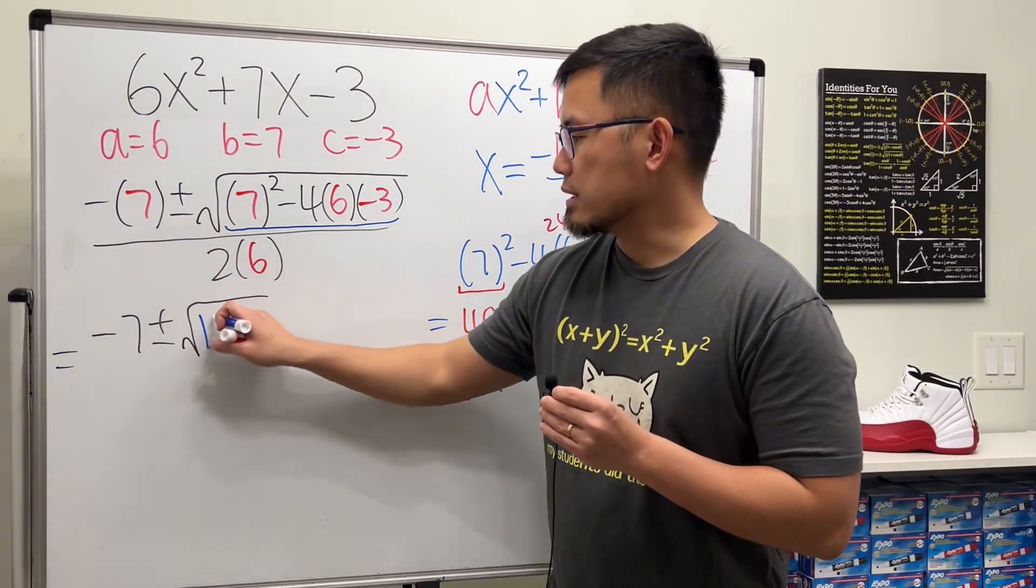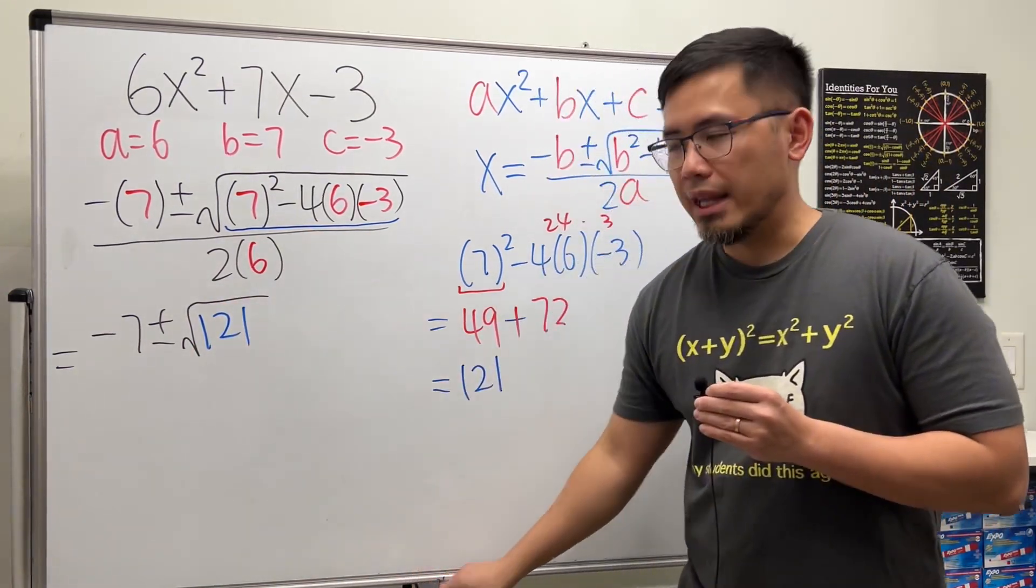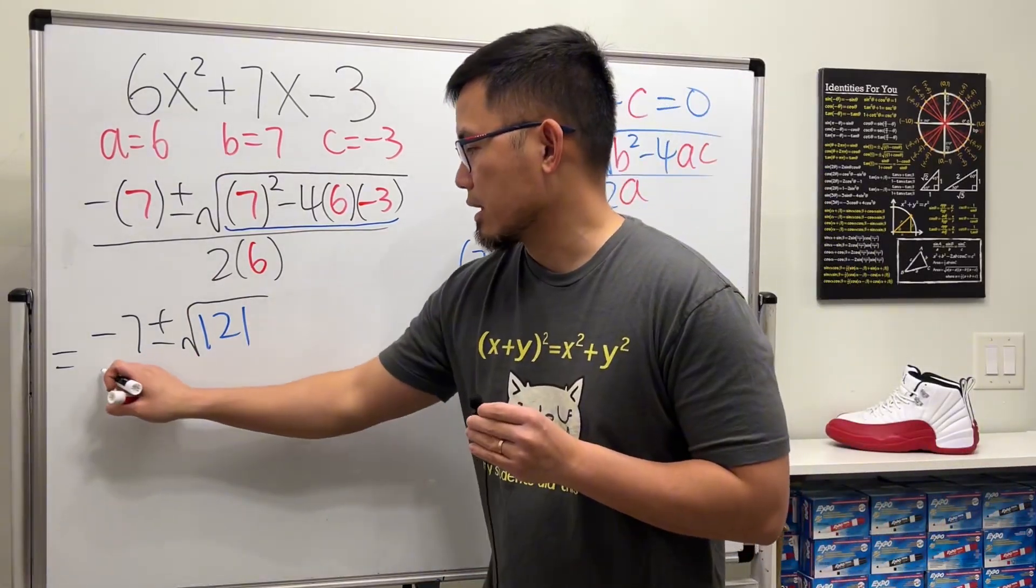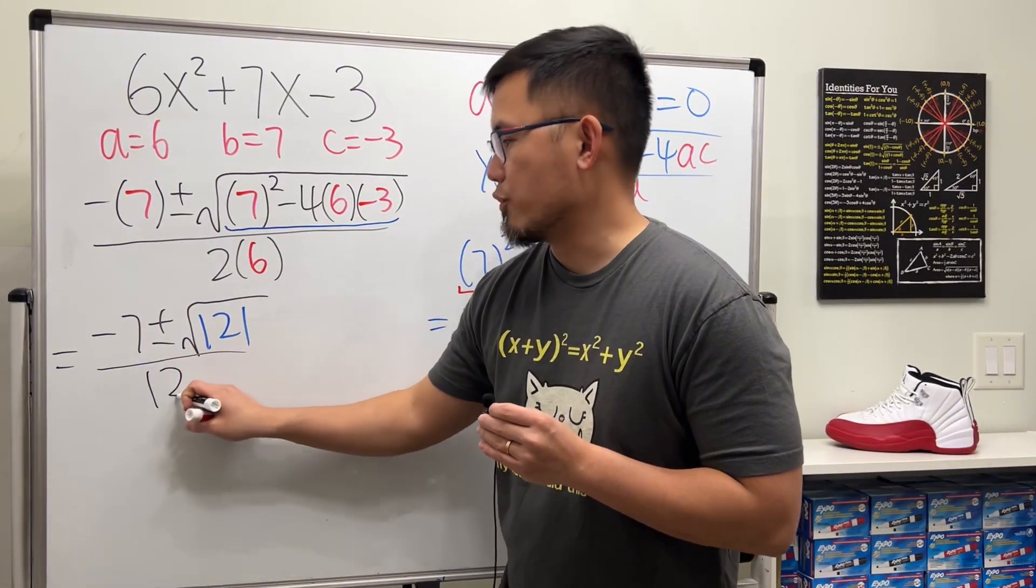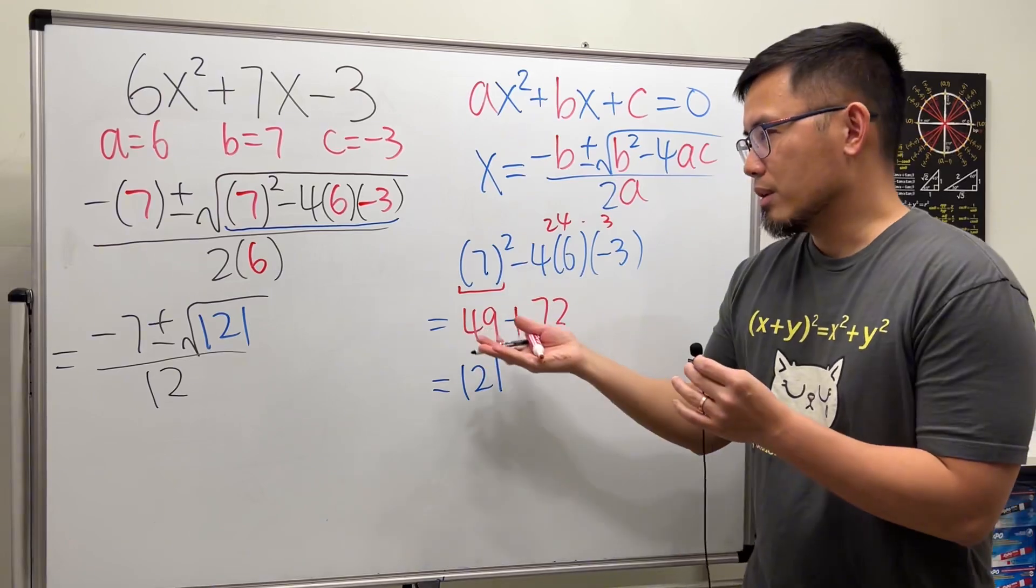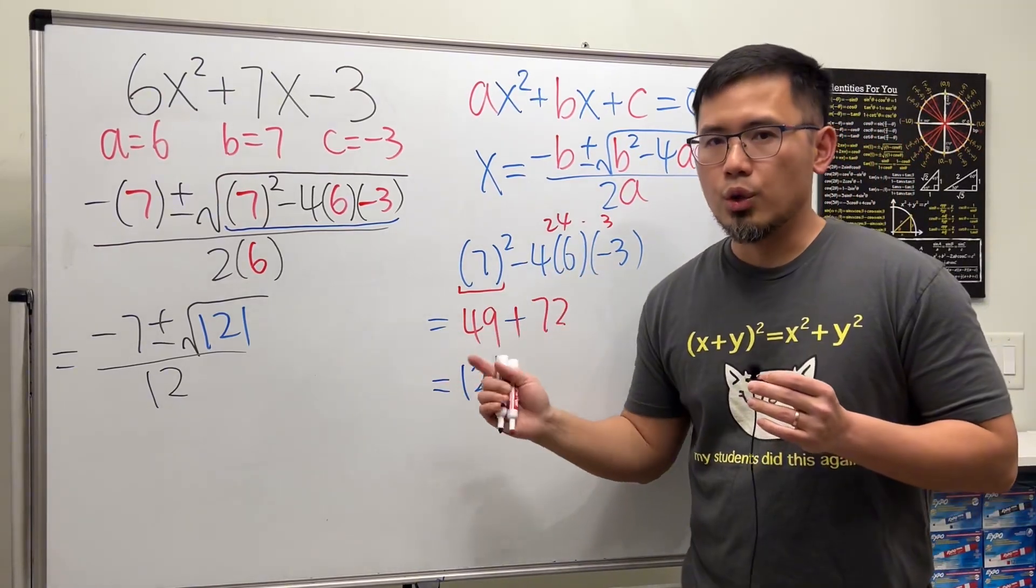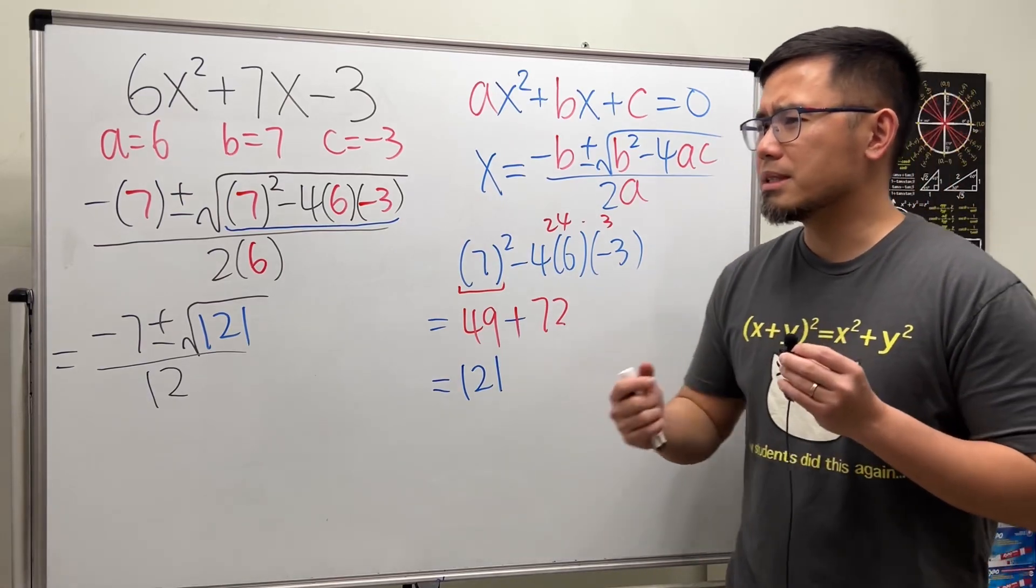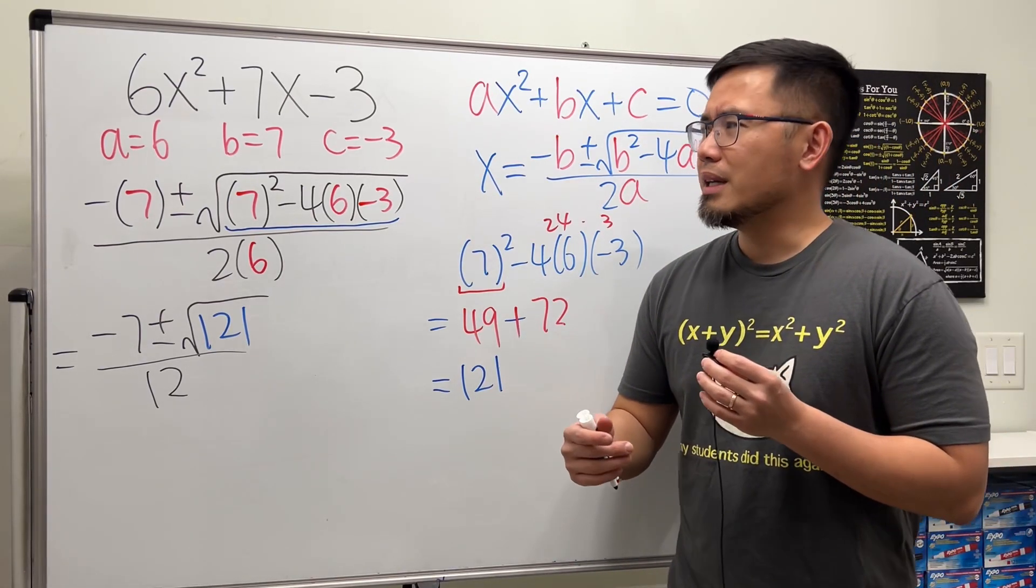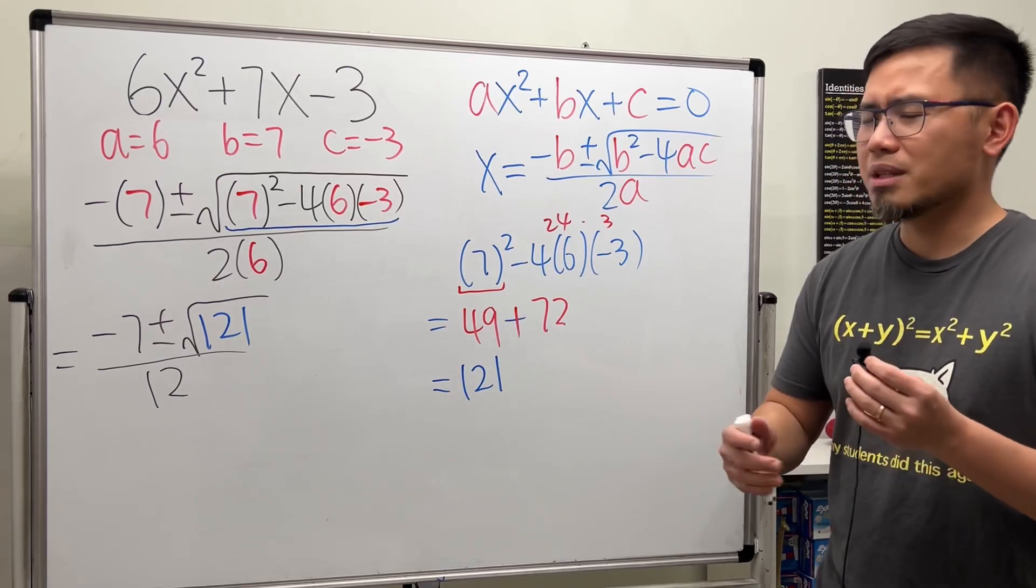This right here gives us 121. This is the number that goes inside of the square root. And then we still have 2 times 6 on the bottom. So that will be 12 right here. I know we are doing a lot of work already, but the good thing is that there is seriously no guess and check involved.